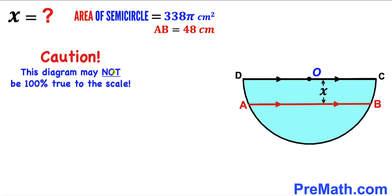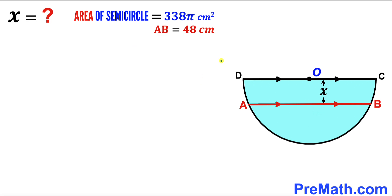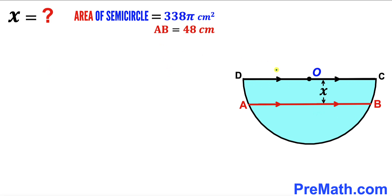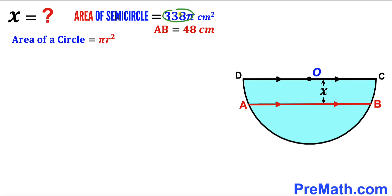Please keep in mind that this figure may not be 100% true to scale. I'm going to share two different approaches, so please watch until the very end. Let's start by calculating the radius of this semicircle using the area of a circle formula: area equals π r², where r is the radius. In our case, the area of the semicircle is 338π.